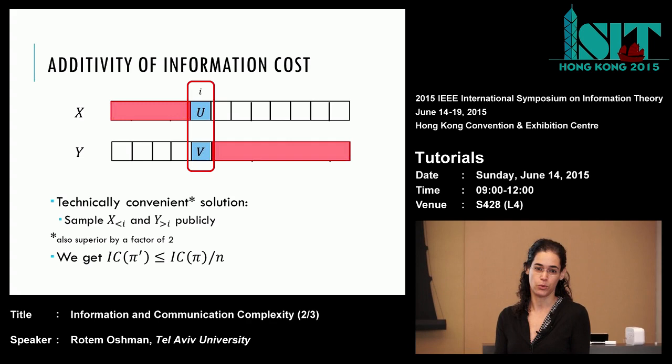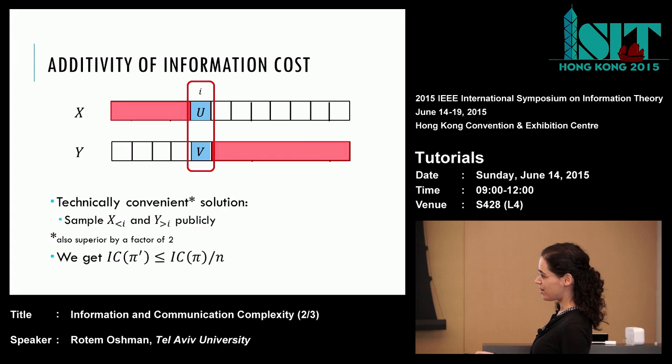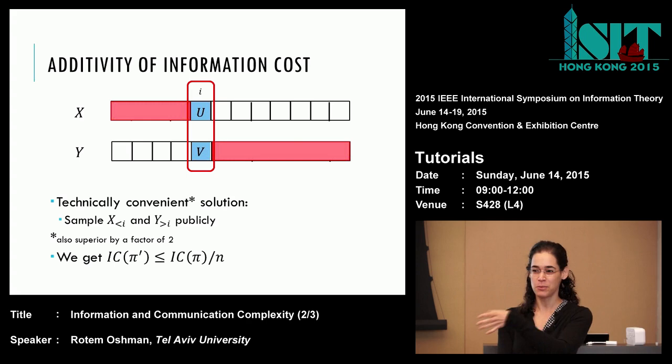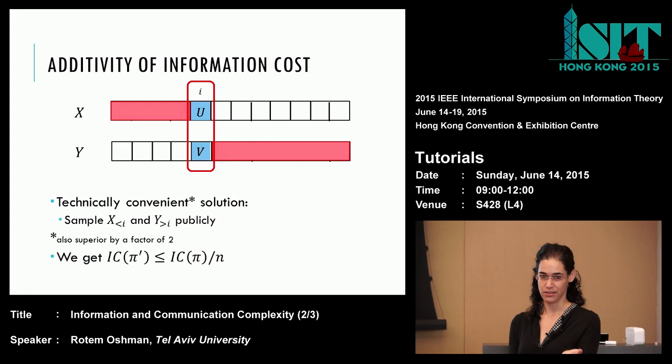Is the choice of i public? Yes, i is chosen publicly. And it's really important that the protocol pi we're simulating doesn't know i. A very stupid choice would be to fix i to be 1 — always put i in the first coordinate — but then the protocol could take advantage of that and always leak information just about the first coordinate. It's important to put it somewhere random so it doesn't know where we're looking, and that's why we get only 1/n of the information.